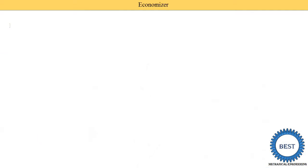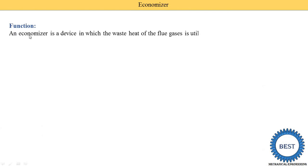First, we study the function of the economizer. The economizer is generally used to heat the feed water, and this heated feed water is then supplied to the boilers. This heating is done by using the waste heat of the flue gases. From the boilers, exhaust gases are supplied to the atmosphere, and they contain some heat energy that is utilized to heat the feed water.